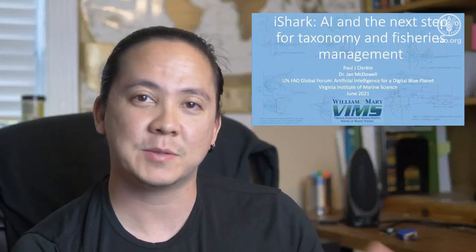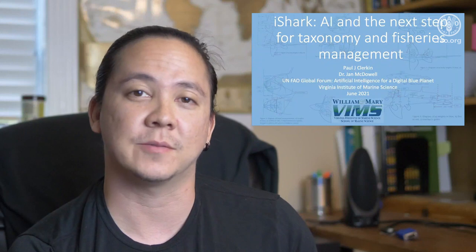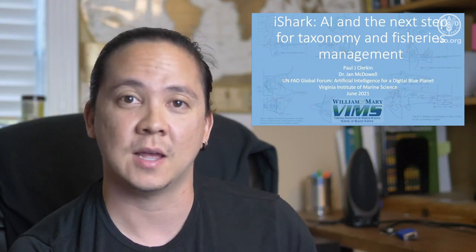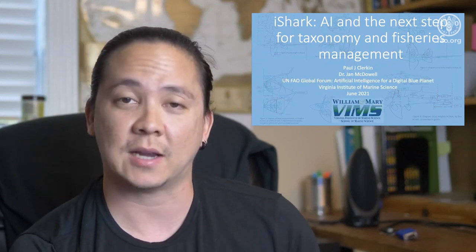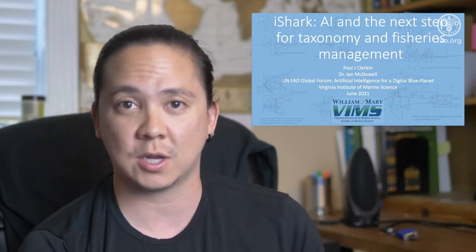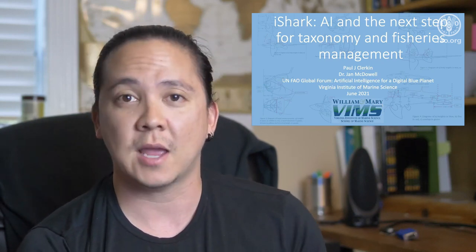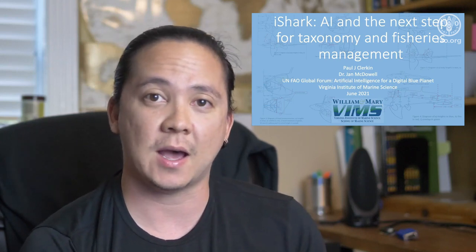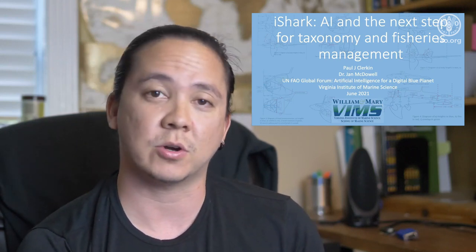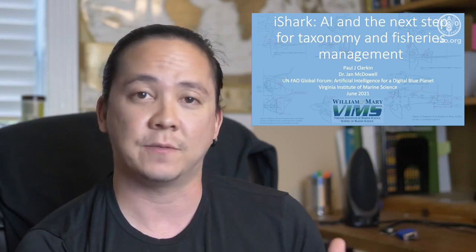Our next presentation is Paul Clerken, talking about AI for data-driven aquatic species identification. My name is Paul Clerken, and I'm a PhD student at the Virginia Institute of Marine Science. I did my master's in shark taxonomy, and I've run workshops for FAO on shark identification. Today I want to talk about why I think AI could be the future for shark identification, taxonomy, and fisheries management.